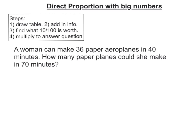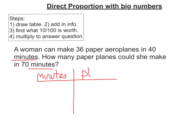Let's look at the second example. A woman can make 36 aeroplanes in 40 minutes — how many paper planes could she make in 70 minutes? I've got to draw my table. The one I put in the left hand column is what I know two things about, so I know two things about minutes. I only know one thing about the number of planes. I know it takes 40 minutes to make 36 planes.